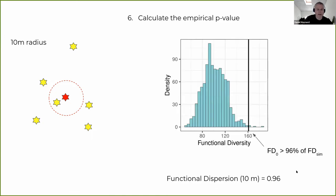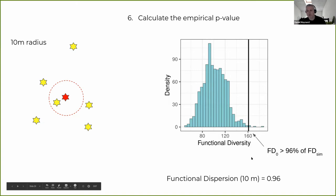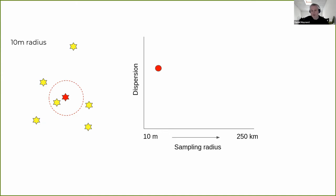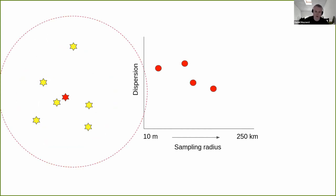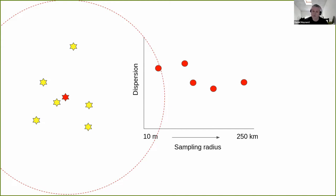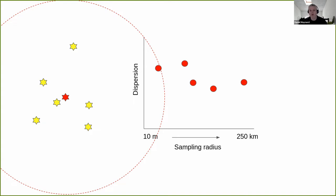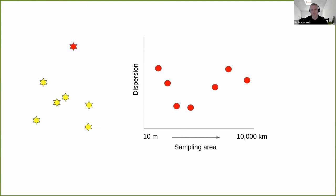To estimate dispersion, it's an empirical p-value: we compare our null model to the actual observed functional diversity at the plot. If observed diversity is greater than 96% of the simulations, functional dispersion is 0.96. We can do this for increasing sampling radii — 10 meters, 100 meters, 1 kilometer — and today's analysis goes out to 250 kilometers, around 300,000 square kilometers. We do this for every single plot — over 25 trillion null model randomizations for this dataset — so it's computationally challenging as well as theoretically interesting.